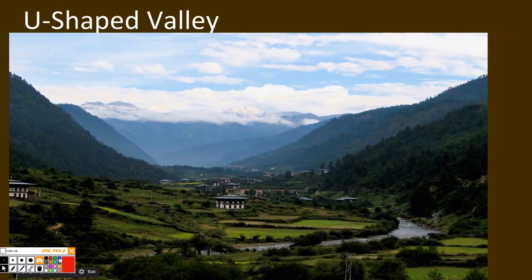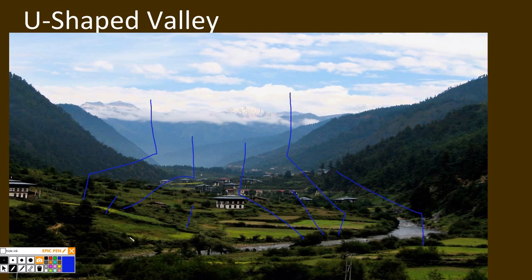U-shaped valleys are created by glacial movement. During an ice age, originally a mountain range was covering this entire area. But a glacier plowed through the area, weathering it down through glacial erosion, and eroding the rocks away from the area.